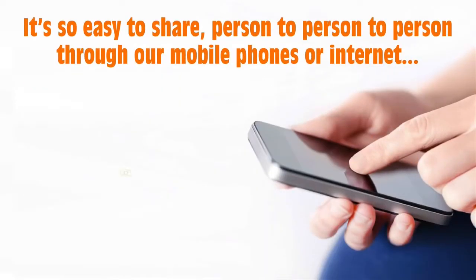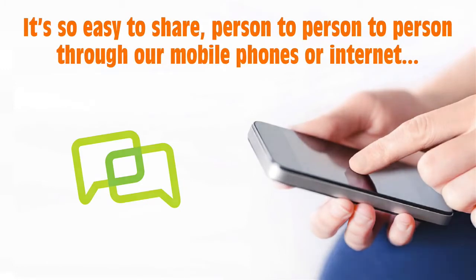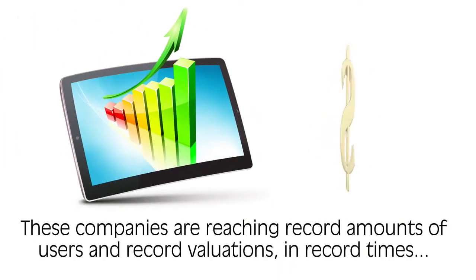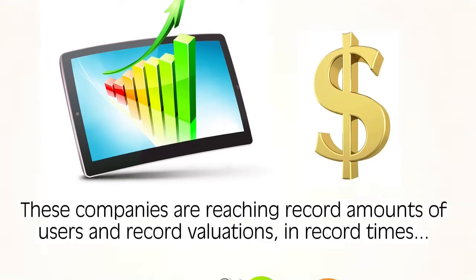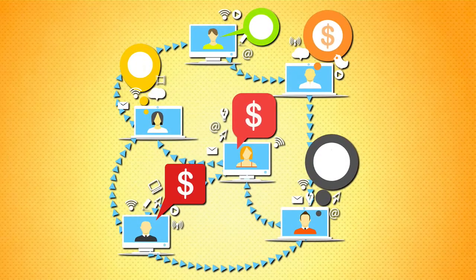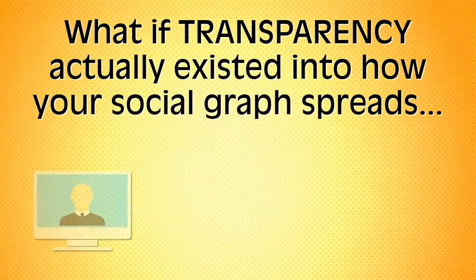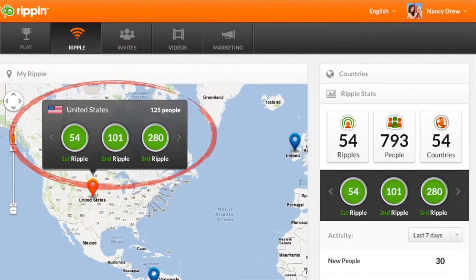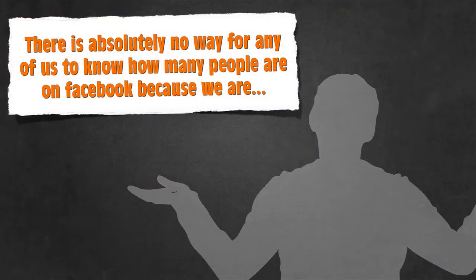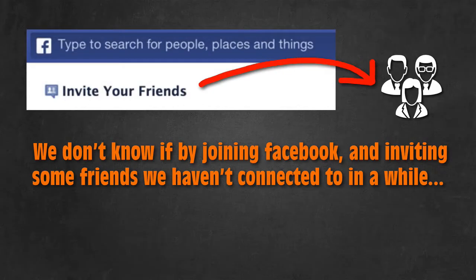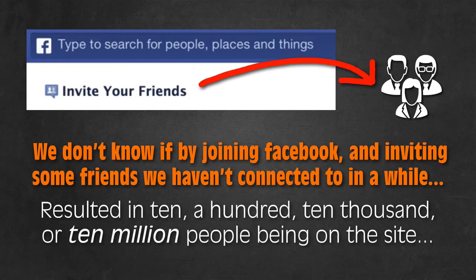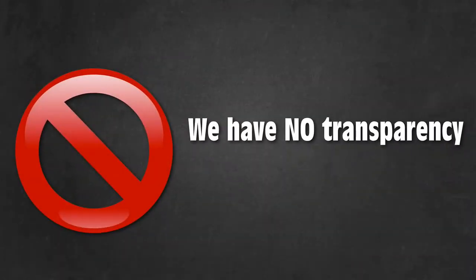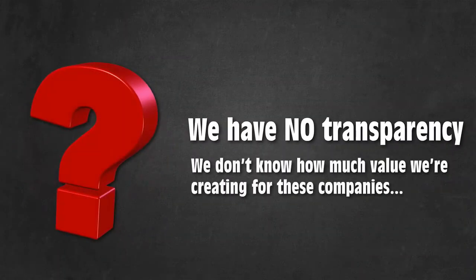Because it's so easy to share person to person through our mobile phones or the internet, these companies are reaching record amounts of users and record valuations in record times. But what if you actually knew how much your word-of-mouth sharing was worth? What if transparency actually existed in how your social graph spread, so you could see what your ripple effect on the world actually is? Currently, there's absolutely no way for any of us to know how many people are on Facebook because we are. We don't know if joining Facebook and inviting some friends resulted in 10, 100, 10,000, or even 10 million people being on the site. We have no transparency, and because we can't see it, we don't know how much value we're creating for these companies.